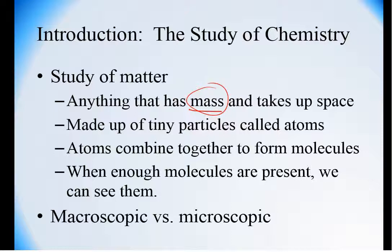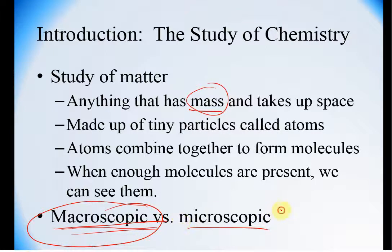When atoms combine together or bond, they form molecules. Eventually, if you have enough molecules in a specific area, you can begin to see them. This is the foundation of chemistry. It's a play between macroscopic and microscopic. We see things that are really large and we're going to use what we see, the observations that we can make, to really discuss what happens on a microscopic level.